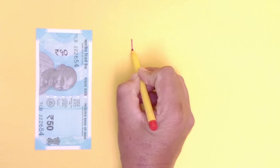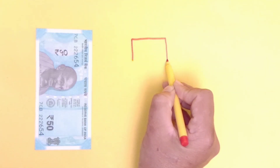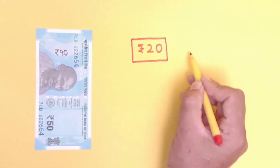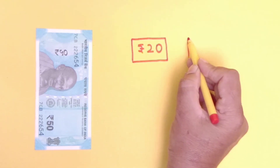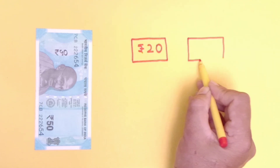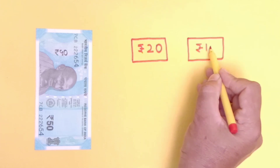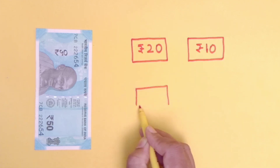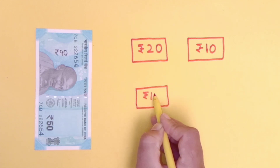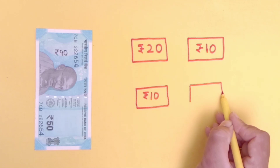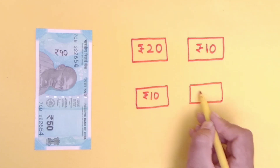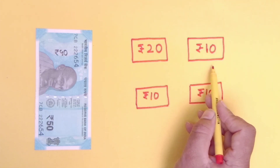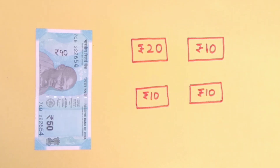Let's try to draw some notes for rupees 50. First of all, we will draw 1 note of rupees 20. Then we will draw 1 note of rupees 10. We have drawn 1 more note of rupees 10. Now we will draw 1 more note of rupees 10 so that their value is equal to rupees 50. This gives us 20 rupees, 30 rupees, 40 rupees, and 50 rupees.